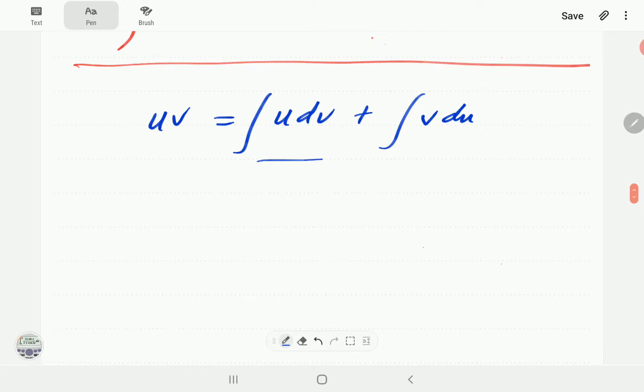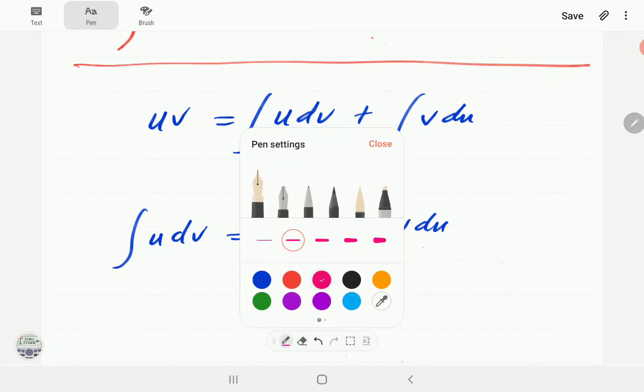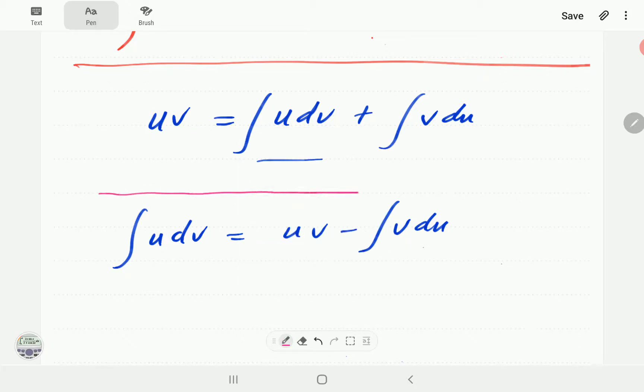What we're going to do now is we are going to make this one the subject of the formula. So we're going to have integral of u dv equal to uv minus integral of v du. This is actually the formula that we're going to use for what is called integration by parts.